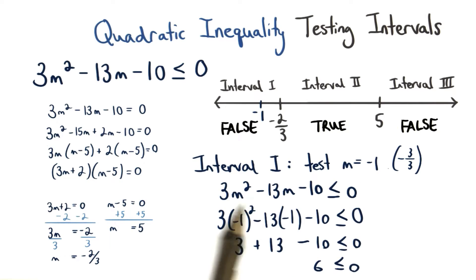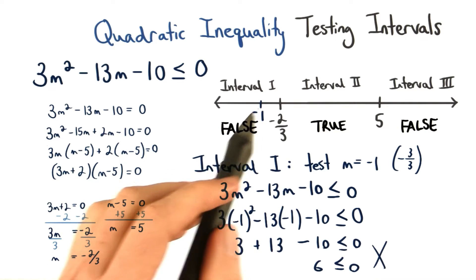Substituting the value of negative 1 in for m, we get the inequality statement that 6 is less than or equal to 0. We know this isn't true, so interval 1 is false.